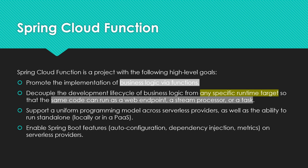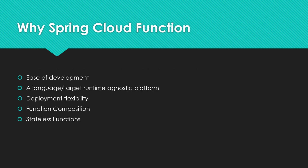Spring Cloud Function also supports a uniform programming model across serverless providers. That means the same function we write can work with different providers — if we are using Azure we can deploy it as Azure Functions, if we are using AWS we can deploy the same function code as AWS Lambda. And just like other Spring projects, when we use Spring Cloud Function we get all the capabilities of Spring Boot: auto-configuration, dependency injection, observability, and so on.